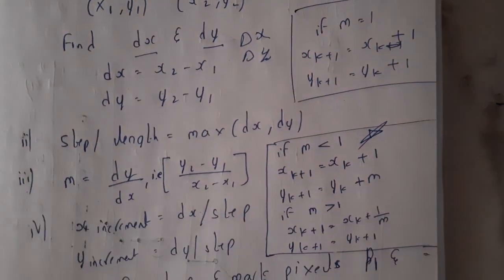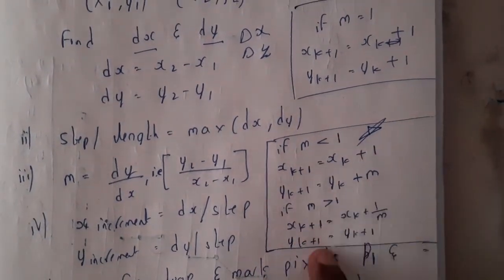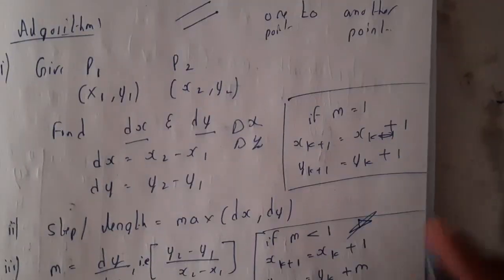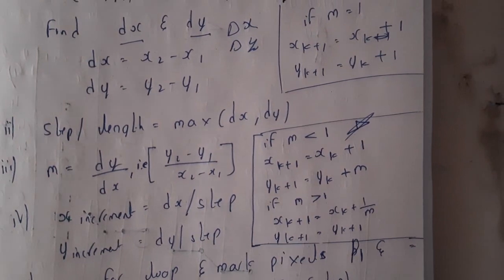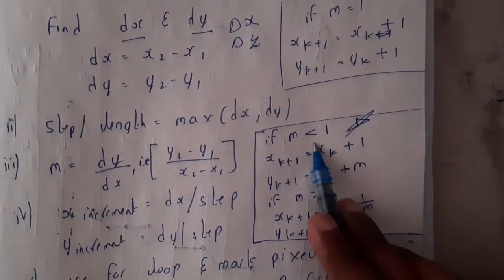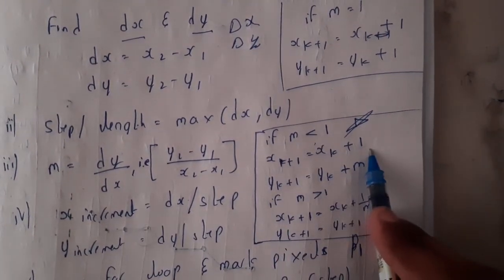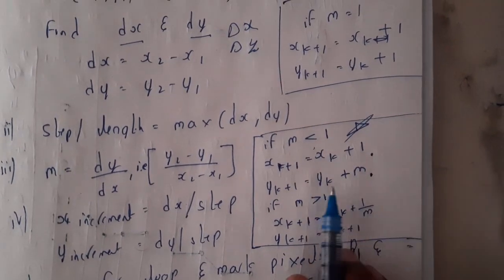M is less than 1, m is greater than 1, m is equal to 1. If it is equal to 1 you'll be incrementing 1, 1, 1, 1 the same way again and again. Whereas if it is less than 1 you'll be incrementing 1 for x and incrementing m for y. If it is greater than 1 you'll be incrementing 1 by m and 1 for y.